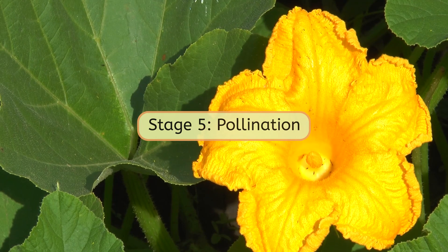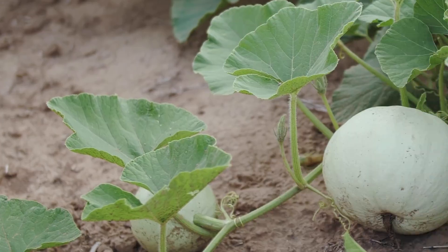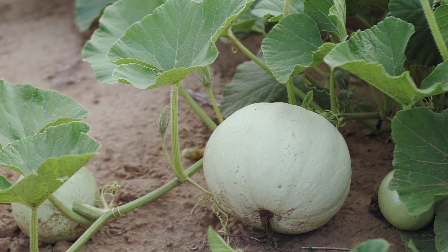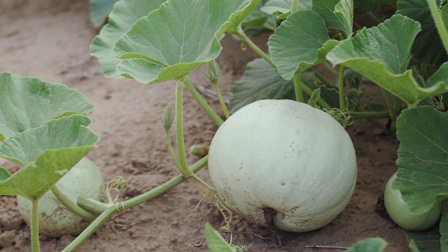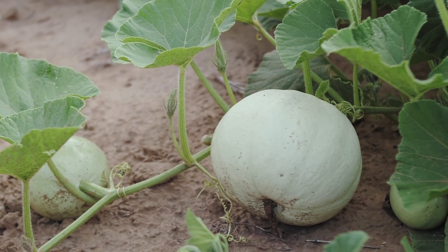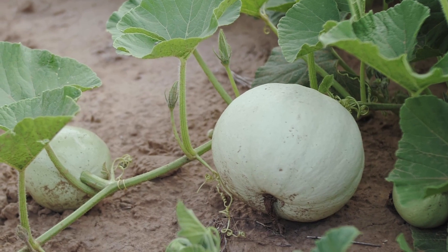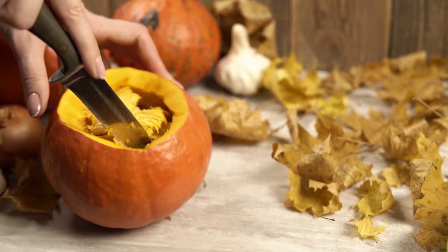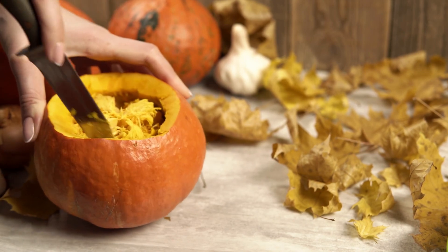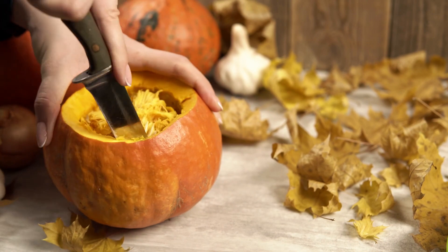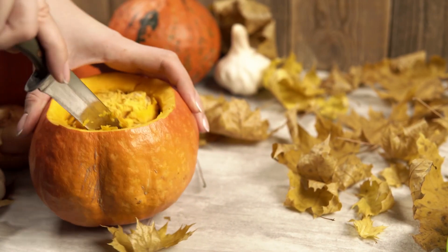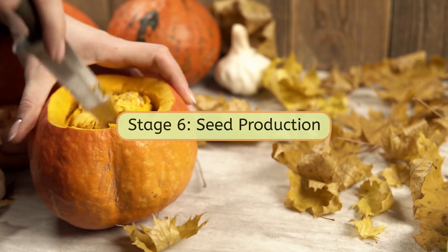Do you remember what flowers do after they've been pollinated? Look what we have here. The pollinated flower grew into a pumpkin, the fruit of this plant. If you've ever opened up a pumpkin or a squash, you might have noticed how its insides are absolutely filled with seeds. We can collect the seeds and roast them to eat, or plant them and begin the life cycle of a new plant. Either way, once a plant has created fruit and seeds, it has reached the final stage of its life: seed production.